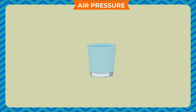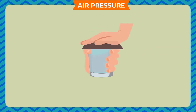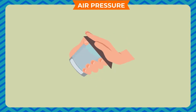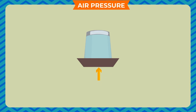Activity 1: Take a glass and fill it with water up to its brim. Place a piece of cardboard on the top of the glass. Now, holding the cardboard in place, turn the glass upside down. We can observe that it is air pressure which pushes the cardboard from below, and this keeps the water in the glass.